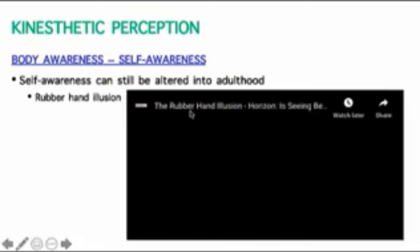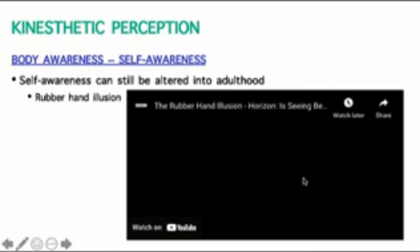There's also a video on the rubber hand illusion, which is quite funny. If you've ever done this experiment, a person sits and has their sense of body ownership manipulated — it's a good example showing how self-awareness can still be altered into adulthood.